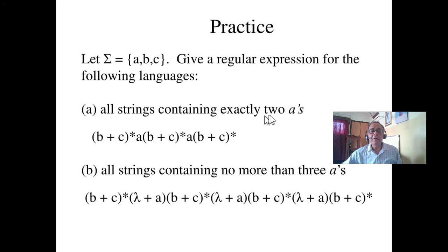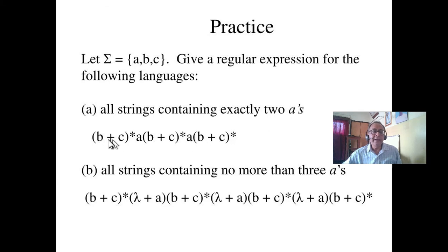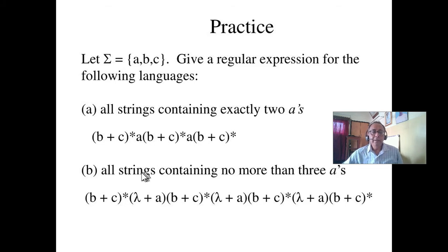All strings containing exactly two A's — how can I do this? Put A here, put A here — that is the example. Put A here, then anything: B or C star, B or C star, B or C. This way, I intelligently put A in the expression.